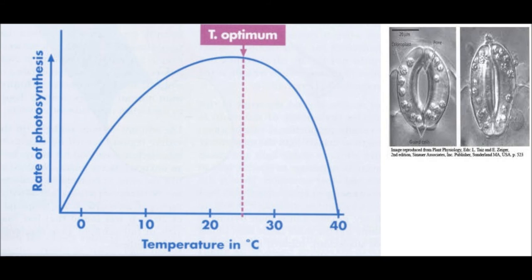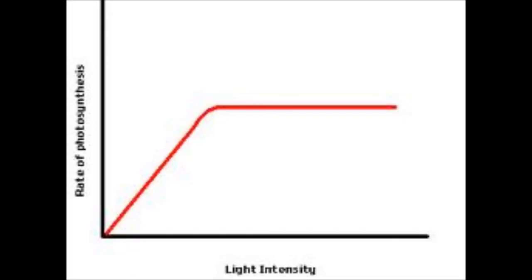The rate of photosynthesis increases as the intensity of light increases until it meets its maximum amount.